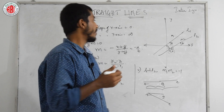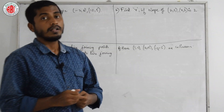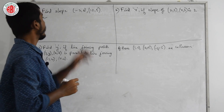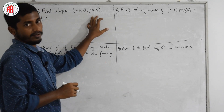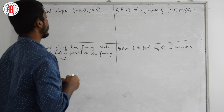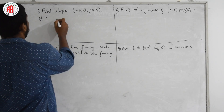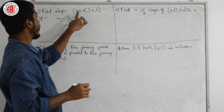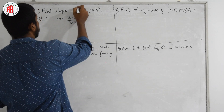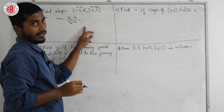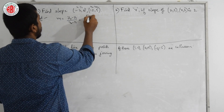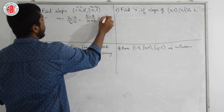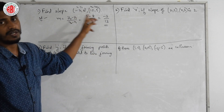Let us discuss a few examples on slope. The first example: find the slope of a line joining two given points. Using the formula m = (y2 − y1) / (x2 − x1), with x1, y1 and x2, y2 substituted: (5 − 8) / (10 − (−3)) = −3 / 13. This is the slope when the two points are given.